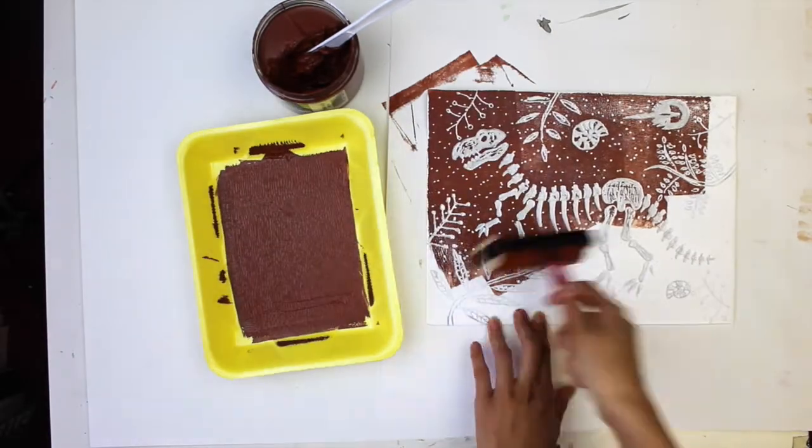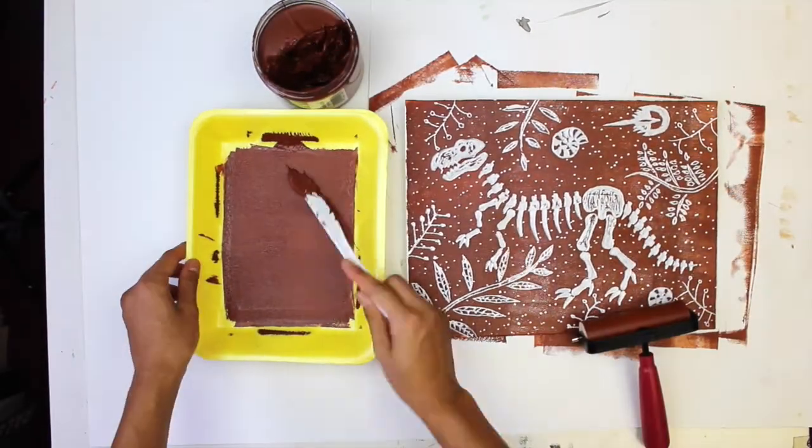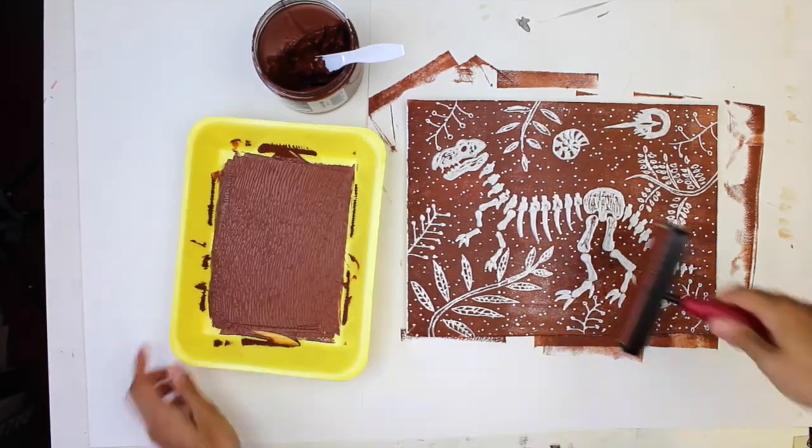Next, roll the ink onto the styrofoam, making sure to cover all parts. If necessary, add more ink. Roll in different directions.